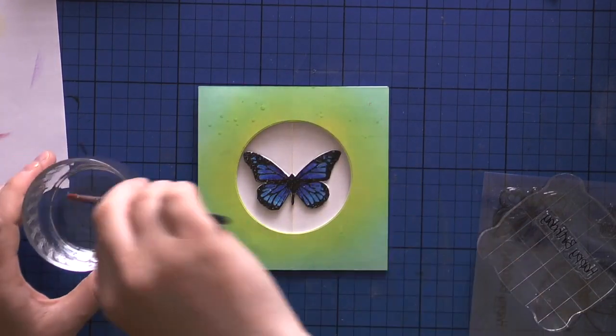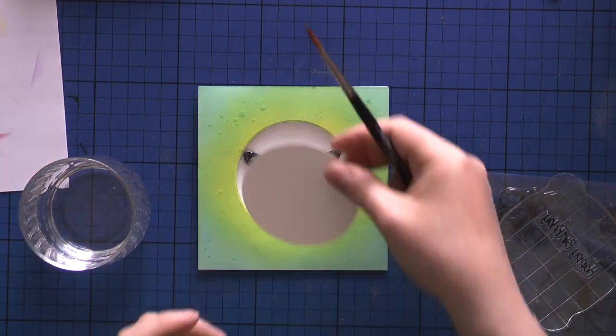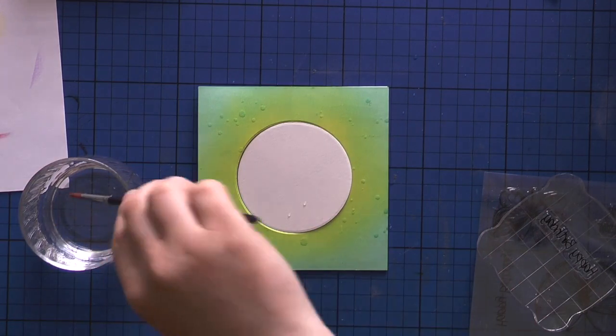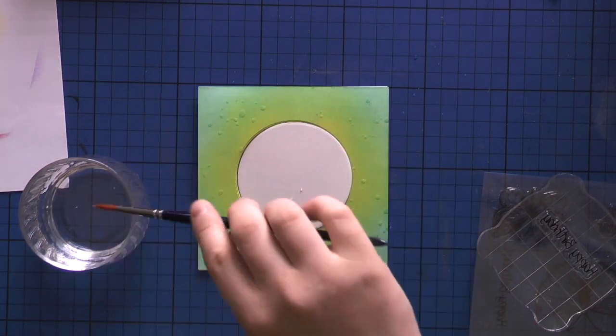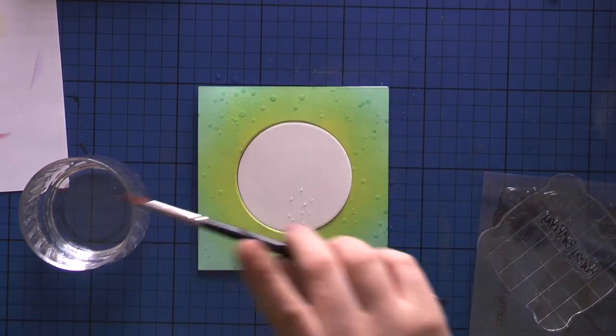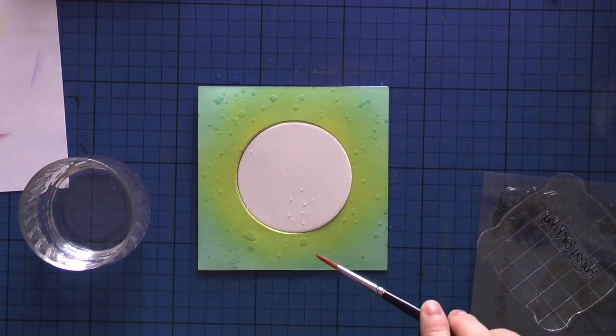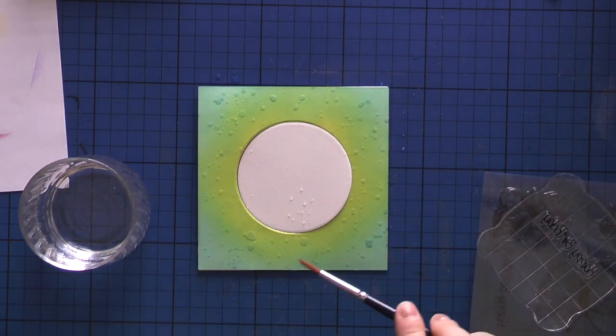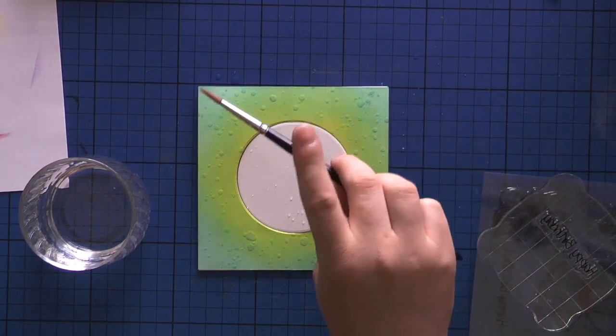I then decided to sprinkle some water on my card front. That method works much better when you actually have watercolor paper, but I still like the effect on the regular Neenah solar white cardstock. It kind of bulks up where the water droplets are.